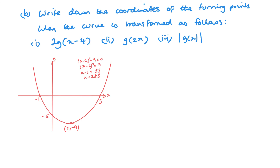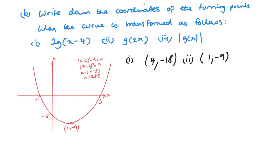Now looking at transformations of g(x). For part 1 — 2g(x−4) — write down the coordinates of the turning point. Moving 4 to the right, then multiplying outside by 2 stretches the y: so the turning point becomes (6, −18). For part 2 — g(2x) — it's inside so affects horizontal and I do the opposite: dividing x by 2 gives a turning point of (1, −9) since the y is unaffected.